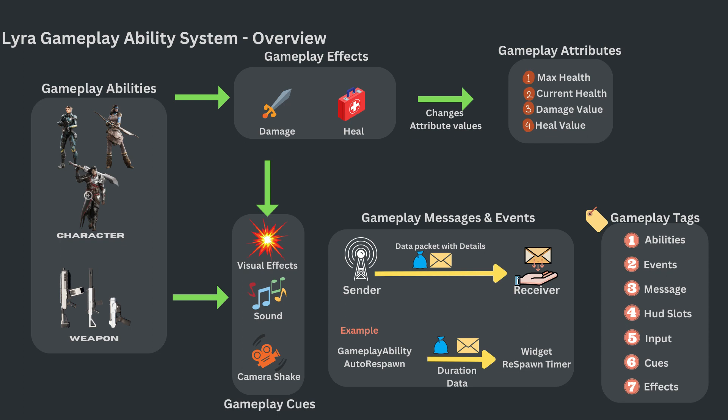Setting up the Gameplay Ability System manually needs significant work in C++. But the Lyra framework is already built on top of the Gameplay Ability System, which makes it even easier with a lot more reusable features, making gameplay development an enjoyable experience.